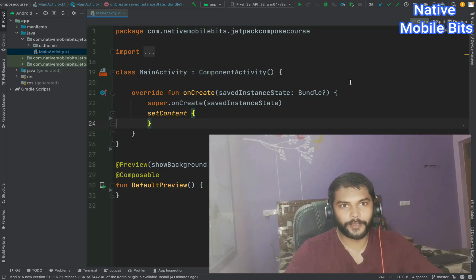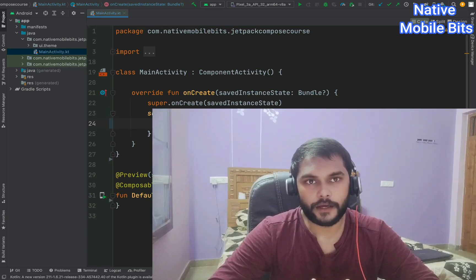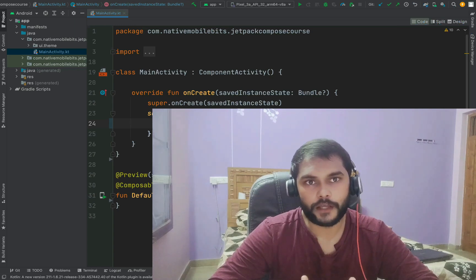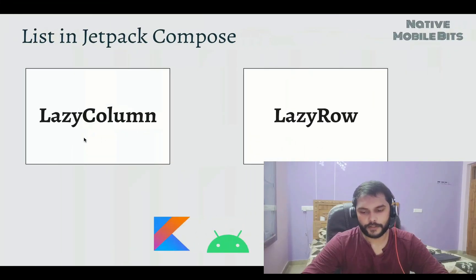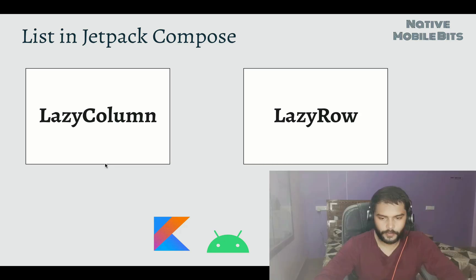Hey everyone, welcome back to Native Mobile Bits. My name is Sachin and today we are going to cover the list composable in the Jetpack Compose series. While developing applications with the XML approach, we used ListView and RecyclerView. In Jetpack Compose, we have LazyColumn and LazyRow. LazyColumn arranges children in vertical orientation and LazyRow arranges them horizontally.